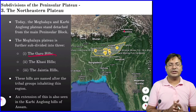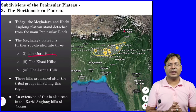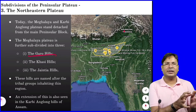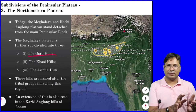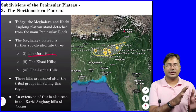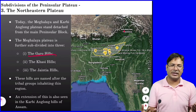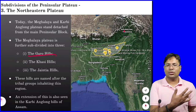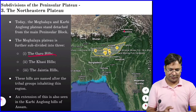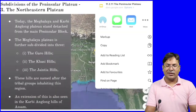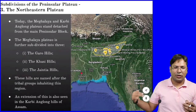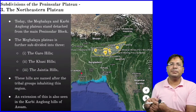The extension of this plateau is also seen in the Karbi Anglong Hills of Assam. Karbi Anglong is the name of a district in Assam. The extension is not only in Meghalaya — though it is majorly known as the Meghalaya Plateau — but its extension is also in Assam. It is known as the North Eastern Plateau, and the formation of this plateau is similar to the Main Peninsular Plateau.